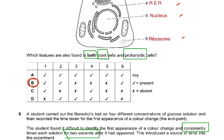An important note for advanced students: the ribosome shown in the animal cell diagram is an 80S ribosome, whereas prokaryotes have 70S ribosomes. So strictly speaking, calling them the same feature is slightly incorrect — the ribosomes are not identical.